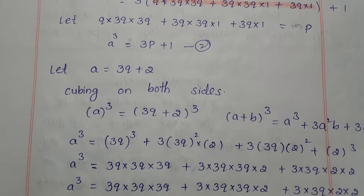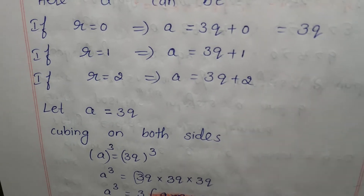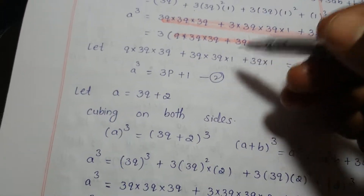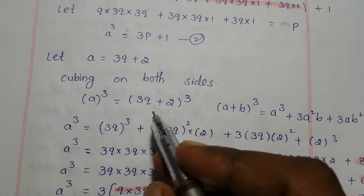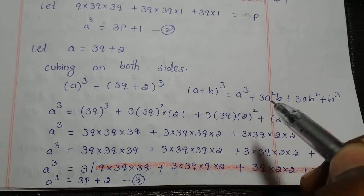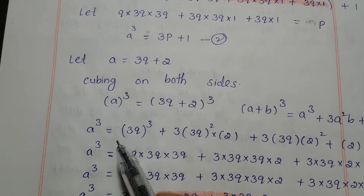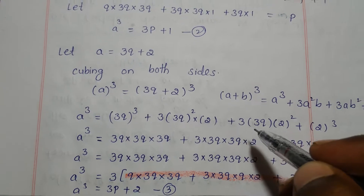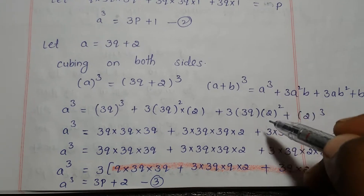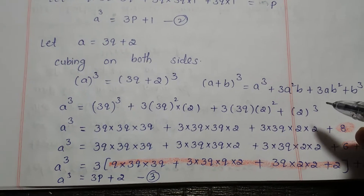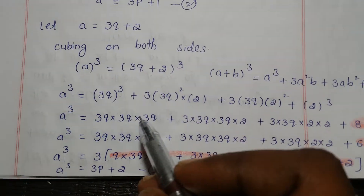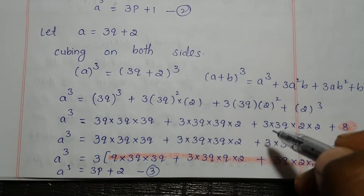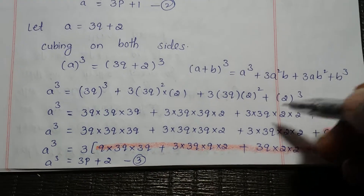Now if r equals 2, a equals 3q plus 2. Cubing on both sides: a cubed equals 3q plus 2 all cubed. Expanding using A plus B cubed equals A cubed plus 3A squared B plus 3AB squared plus B cubed: a cubed equals 3q all cubed plus 3 into 3q squared into 2 plus 3 into 3q into 2 squared plus 2 cubed. Expanding further: 3q into 3q into 3q plus 3 into 3q into 3q into 2 plus 3 into 3q into 4 plus 8.